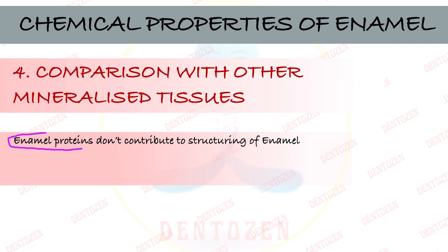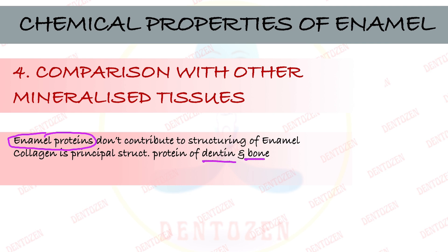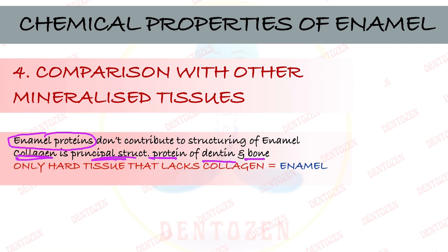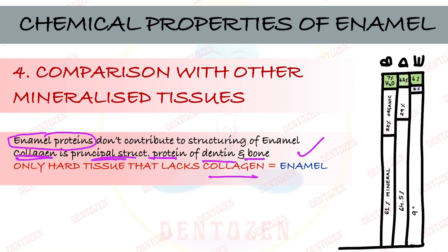Comparing enamel with other hard tissues: the organic component of enamel is mainly enamel proteins, which later get replaced by mineral, whereas in other hard tissues like dentine and bone, collagen is the principal structural protein. Enamel is the only hard tissue that lacks collagen.